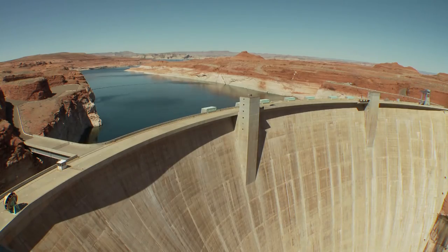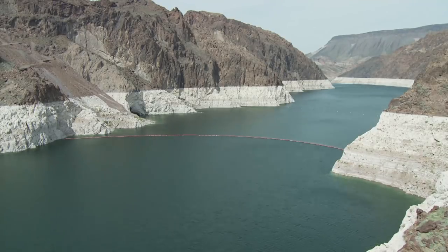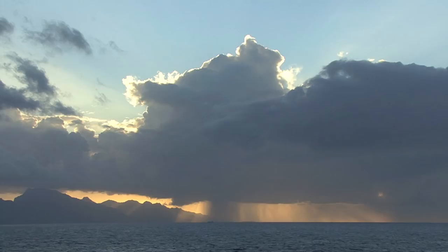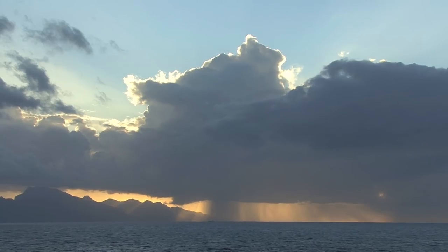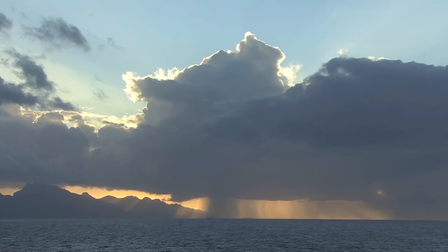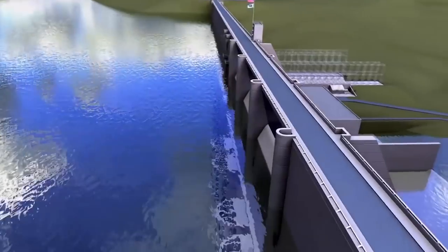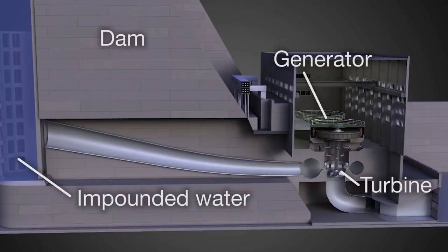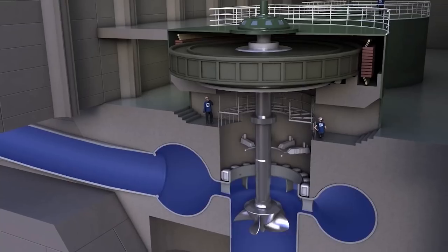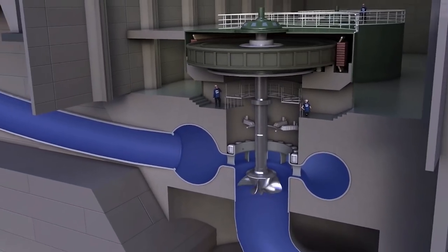Hydroelectricity does have a number of advantages. In a hydro dam, you generate electricity from a non-depletable resource: water. As long as the sun shines, water will evaporate into the atmosphere and eventually come down as rain. Gravity will bring that water to the ocean. If you impound the water behind a dam and then release it when you need it, you can transfer the potential energy in the impounded water to kinetic energy of moving water that will turn a turbine and generate electricity.